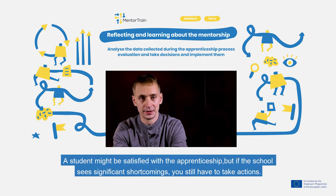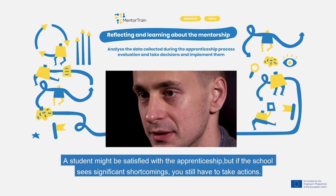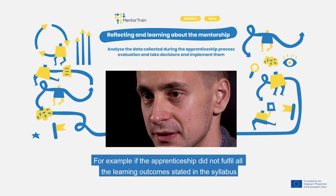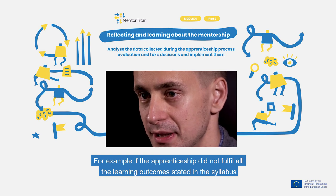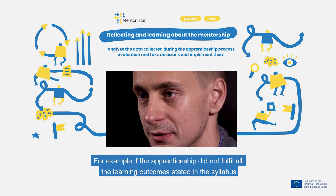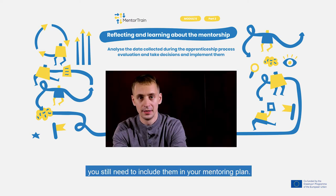A student might be satisfied with the apprenticeship, but if the school sees significant shortcomings, you still need to take action. For example, if the apprenticeship did not fulfill all the learning outcomes stated in the syllabus, you still need to include them in your mentoring plan.